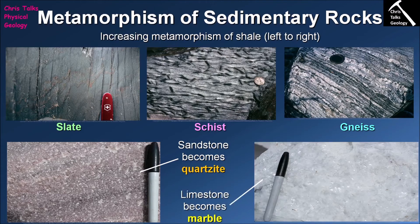The other metamorphic rock that can form from a sedimentary protolith is marble. Marble forms from the metamorphism of a limestone protolith. Limestone is typically dominated by the mineral calcite — calcium carbonate — and calcite, like quartz, is a surprisingly stable mineral. If you take a piece of calcite and start increasing pressure and temperature, it just sits there. As temperature and pressure increases from low to medium to high grade, the crystals start merging to form larger calcite crystals.